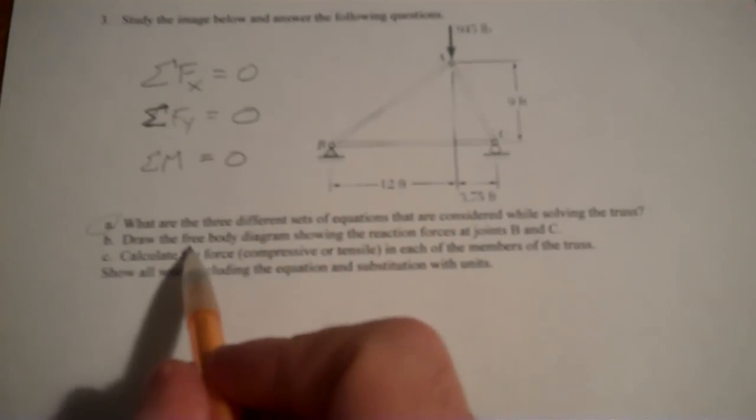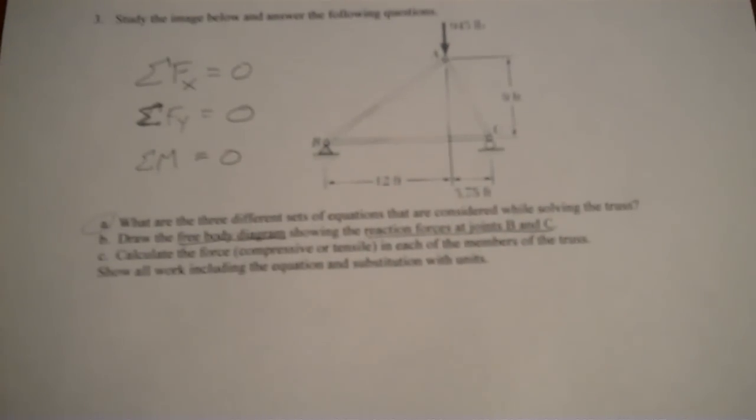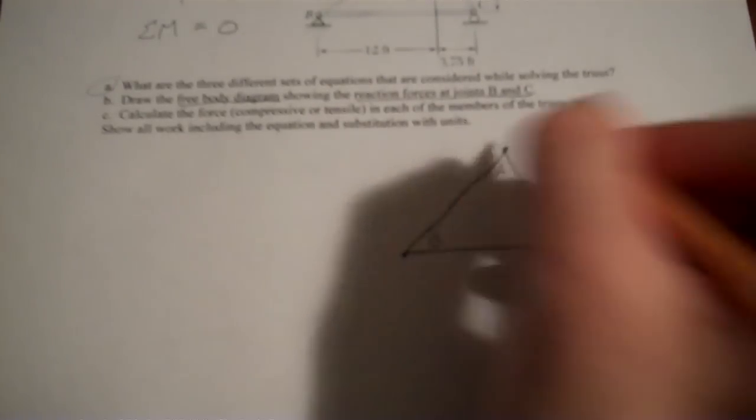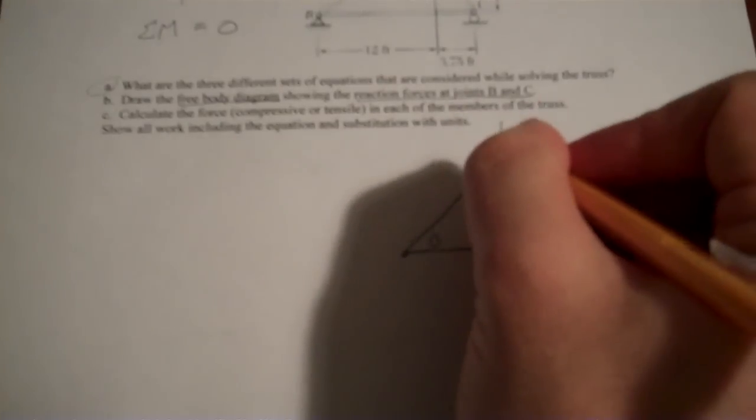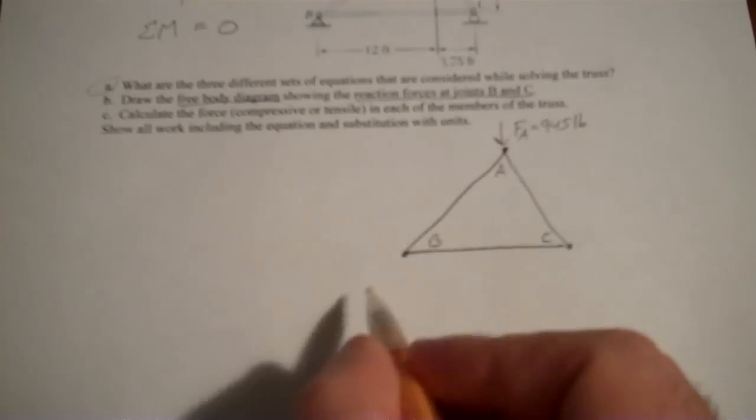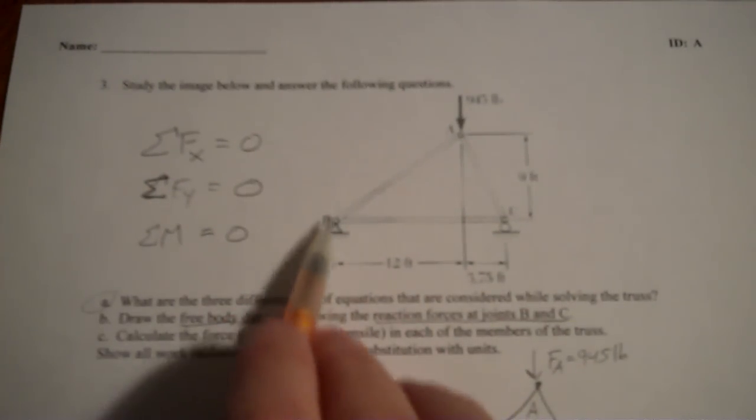So, let's draw a free body diagram showing the reaction forces at joints B and C. Okay, so let's start with a more simple diagram here. A, B, and C. This is point A, point B, joint C. We have a force being applied at A, that I'm going to call that force A, which is 945 pounds. Now, B, according to the diagram here, is a hinge, a hinge joint. So it's going to apply a force in the vertical, in the horizontal, but will not apply any moment or anything. So it'll have two forces at a hinge.